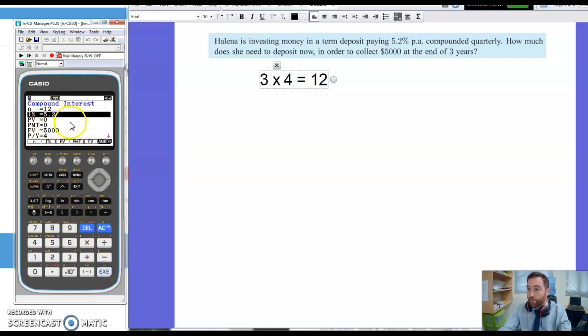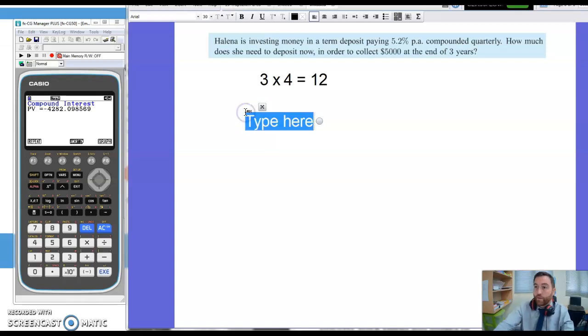I think we've put everything else in. So present value is what we're calculating here. And you can see that Helena needs to invest $4,282.10 rounded to two decimal places. That's how much she would invest in order to collect $5,000 at the end of three years.